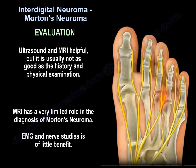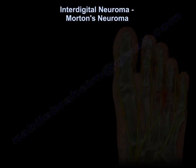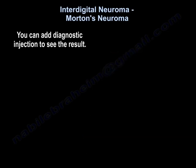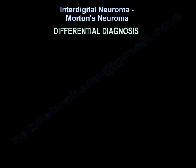MRI has a very limited role in the diagnosis of Morton's Neuroma. EMG and nerve conduction studies are of little benefit. The history and physical exam is the gold standard for diagnosis of interdigital neuroma. A diagnostic injection of local anesthesia into the area of the interdigital nerve can also be helpful for confirming the diagnosis.